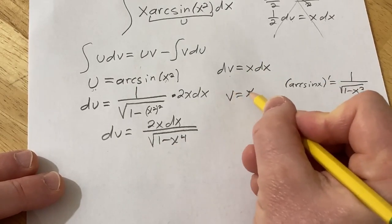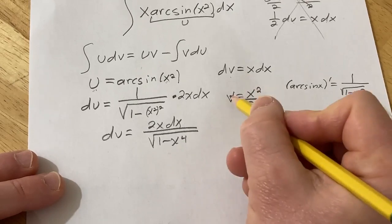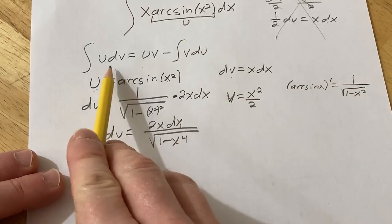Integrating this one, we get V equals x squared over 2. You don't add the plus C whenever you're doing parts. Okay. All right. So now we're going to apply the formula.